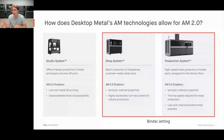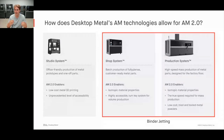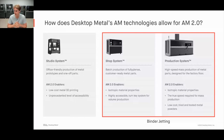On the extreme, we have the Production System, designed for high-speed mass production of metal parts on the factory floor. You're still getting beautiful isotropic material properties, but now with true speed required for mass production, utilizing very low-cost metal powders to allow you to produce parts at incredibly low costs.